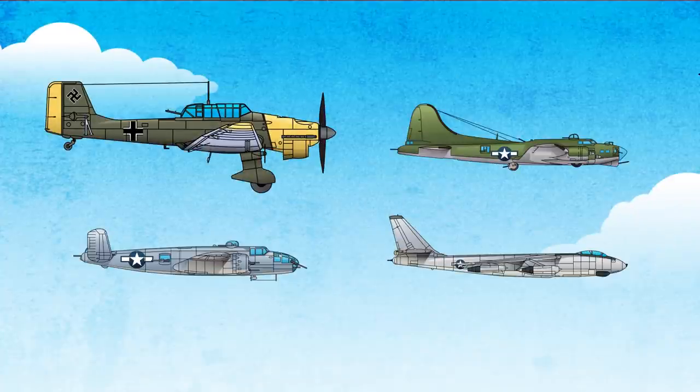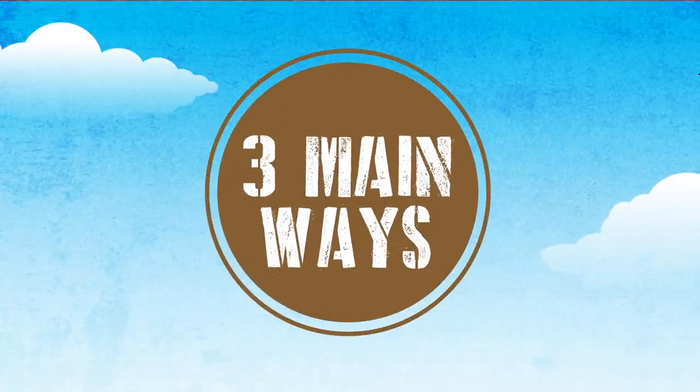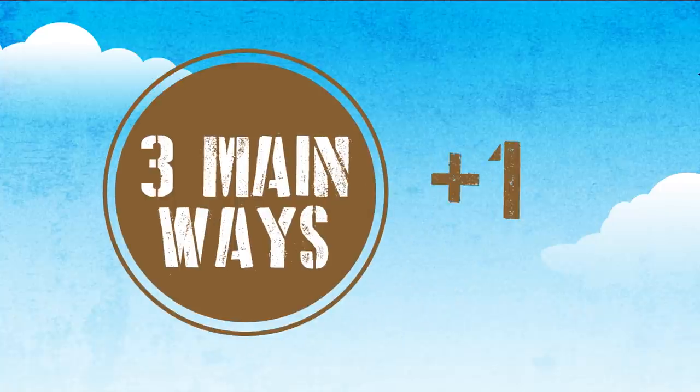Since then, as planes became more sophisticated, so did the way they dropped bombs. There are three main ways it was done in the early days, but we'll include an extra one for you, which was not typically done, called the Idiot's Loop.